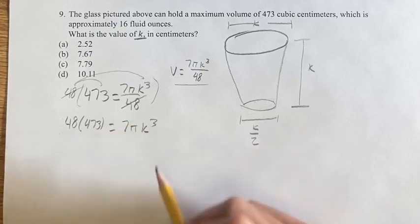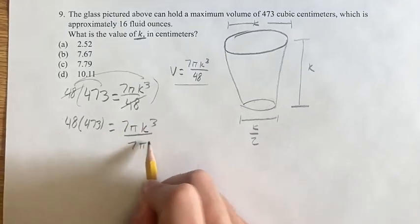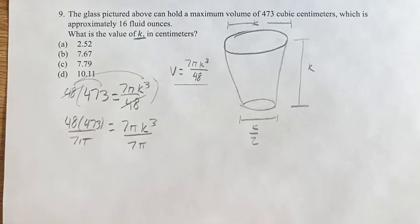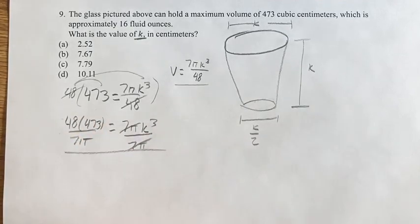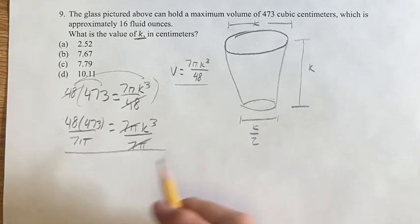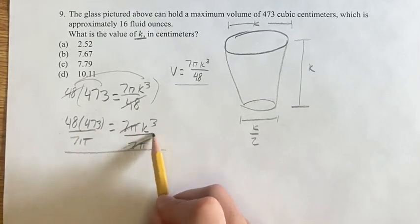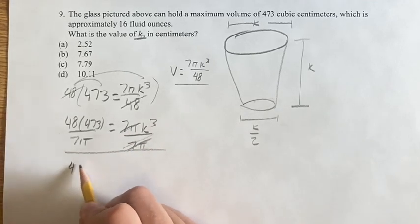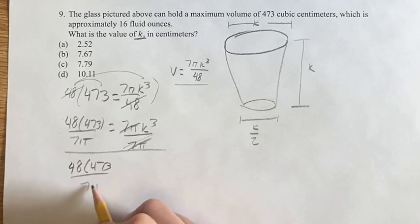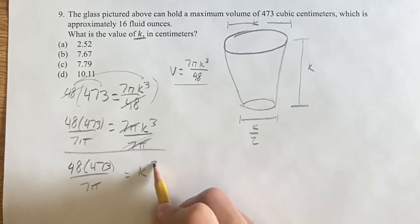Again, we want to solve for k, so we want to get it on its own. So we want to divide both things by 7 pi. And I'm not converting this into a decimal just yet, because it's going to get really messy. You can do that at the end. But if we divide both sides by 7 pi, the coefficient of this side disappears. We're left with 48 times 473 over 7 pi is equal to k cubed.